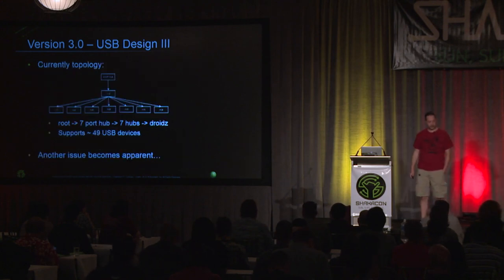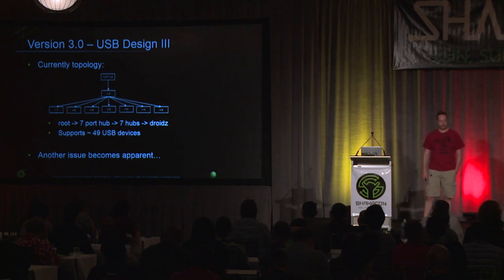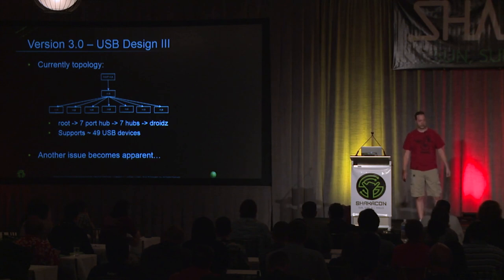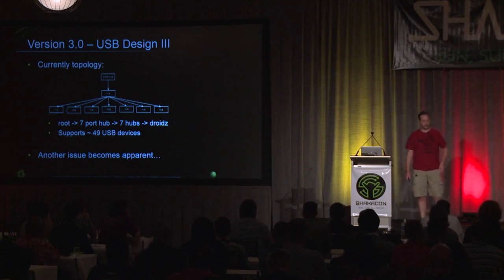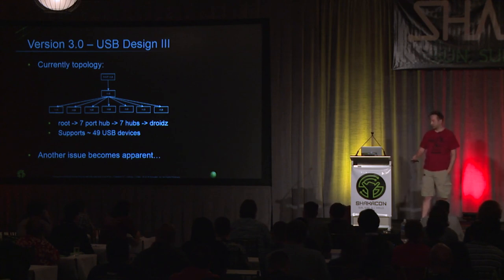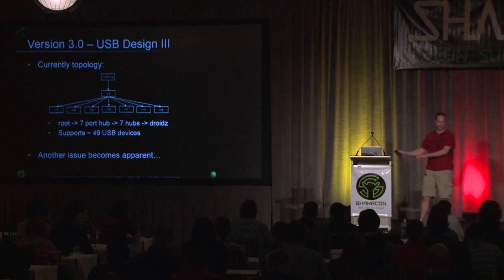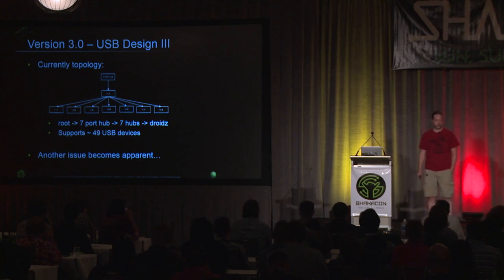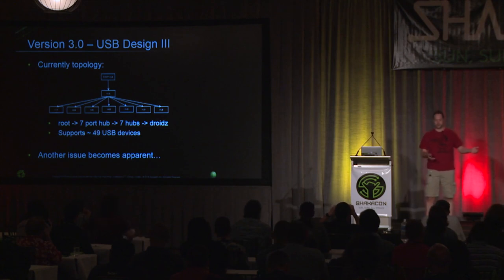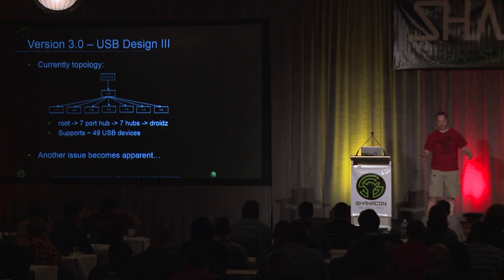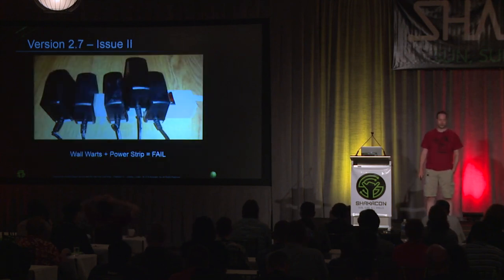The current topology has seven hubs plugged into one hub, which is convenient — if I don't want the cluster, I just yank the one cord. Right now it supports about 49 USB devices, with 45 plugged in during the demo. Another issue was the wall warts that come with these USB hubs — the size of them is totally a problem for the power strip. So I found a Bitcoin miner forum project where someone had built a cabling system using an ATX power supply to run ASIC miners, and I decided to build my own version.